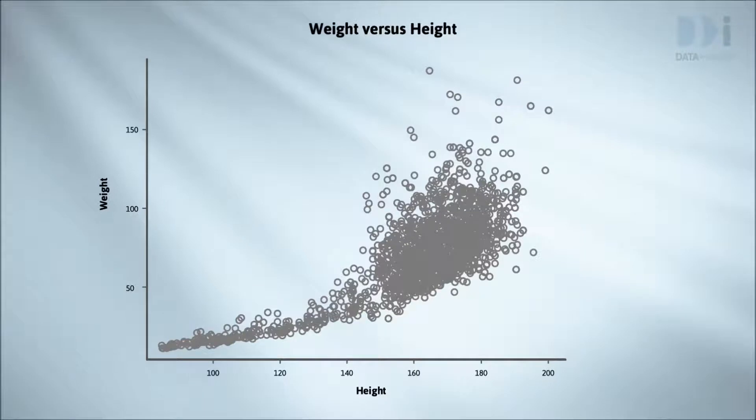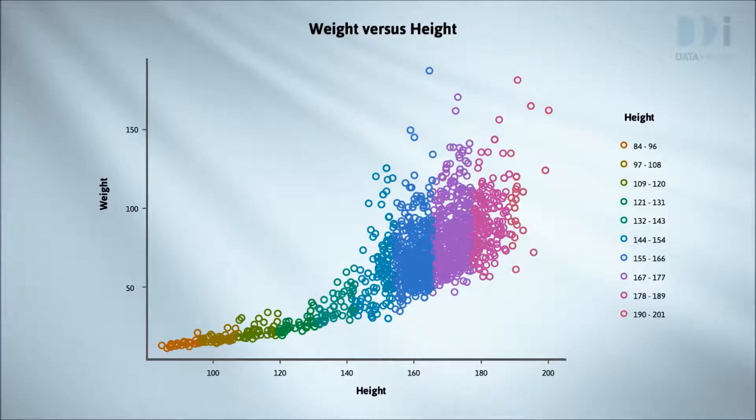Let's start with relating weight to height. One of the things we'll try to understand is why this relationship looks the way it does. Here we've colored by height, the horizontal scale. The height range has been broken up into intervals. Reading the right hand legend from the top, they are 84 to 96, 97 to 108, 109 to 120, and so on. The points are then colored accordingly. This makes vertical bands of color across the plot, as we might expect.